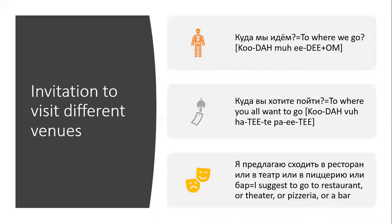If you want to invite somebody to different venues, you could start with куда мы идем? Where are we going? Literally, it means to where we go. Or you could say more politely куда вы хотите пойти? Which literally means to where you want to go.